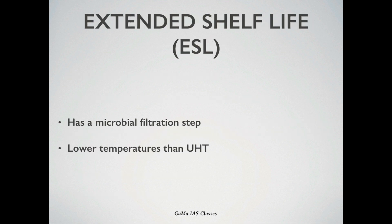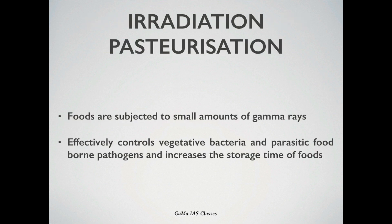The Extended Shelf Life, or ESL method, has a microbial filtration step and it usually uses a temperature lower than UHT. In irradiation pasteurization, foods are subjected to a small amount of gamma rays. This effectively controls vegetative bacteria and parasitic foodborne pathogens and increases the storage time of foods.